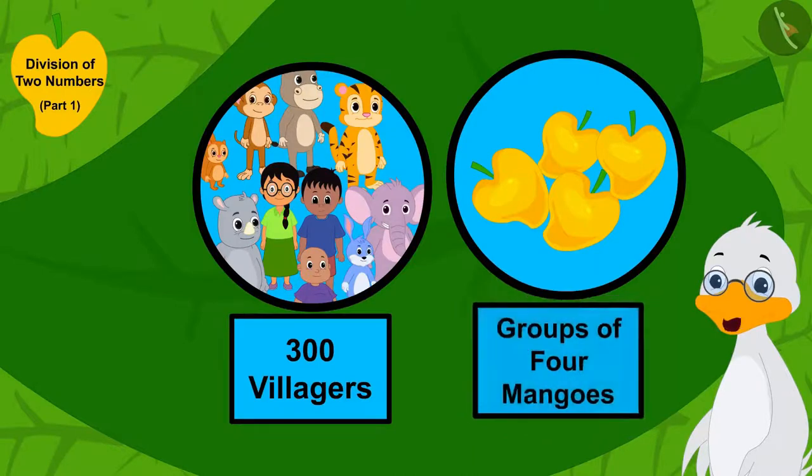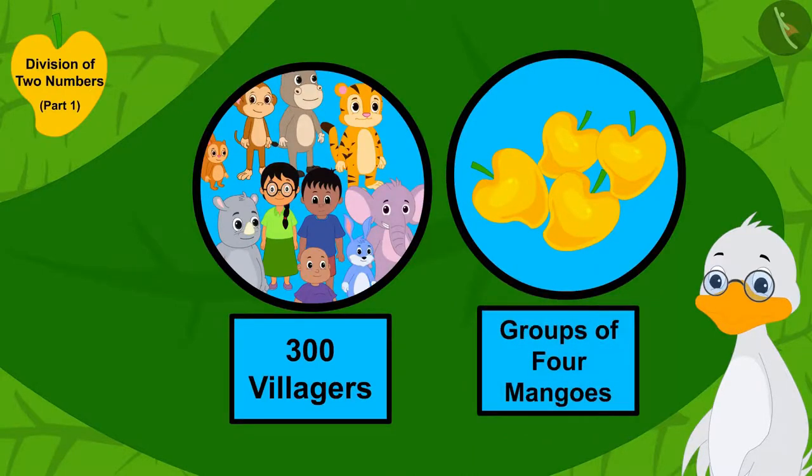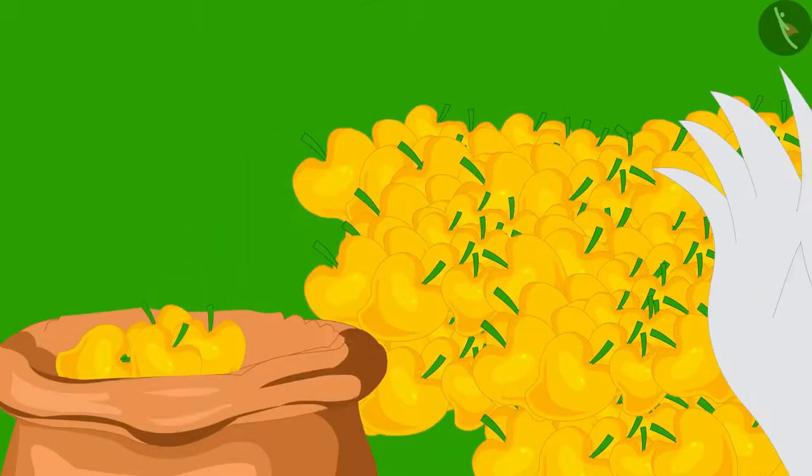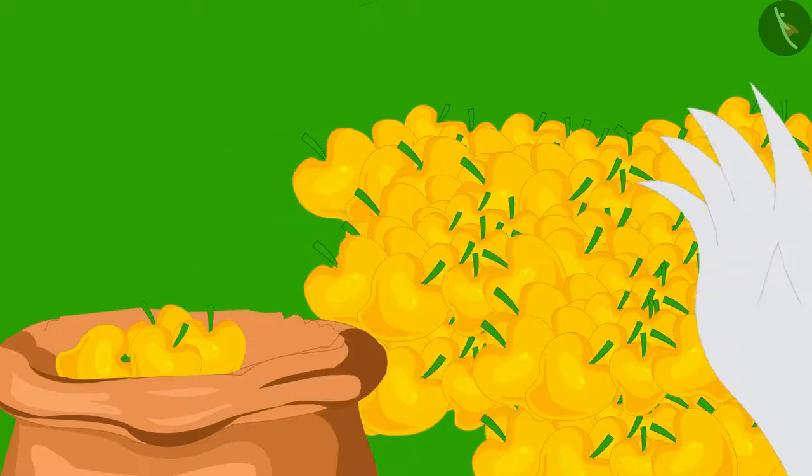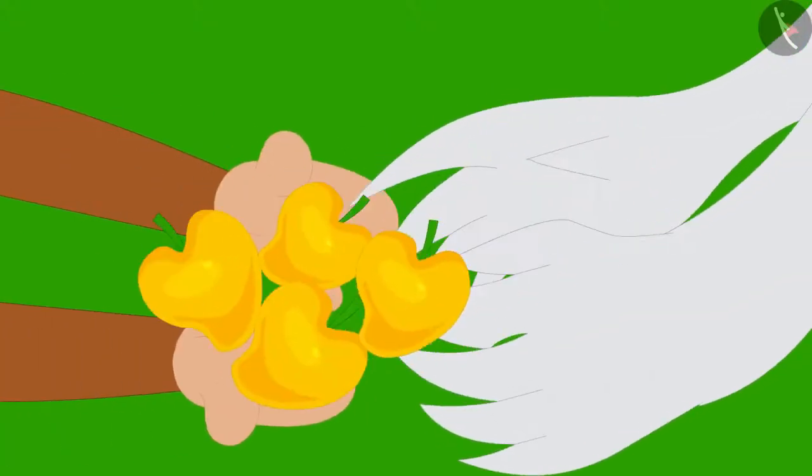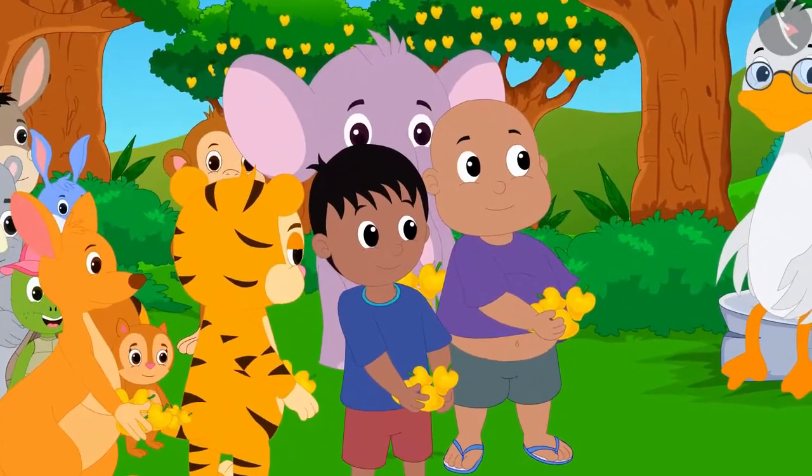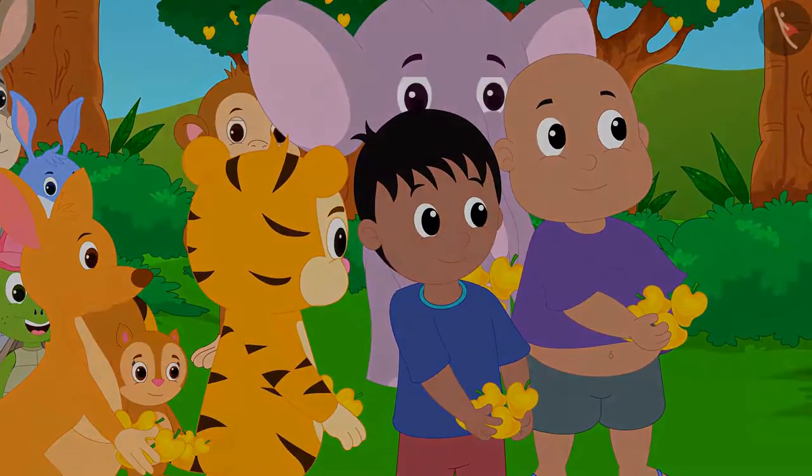Barbole uncle immediately filled all his mangoes in one bag and distributed them in groups of four mangoes equally among the 300 villagers.